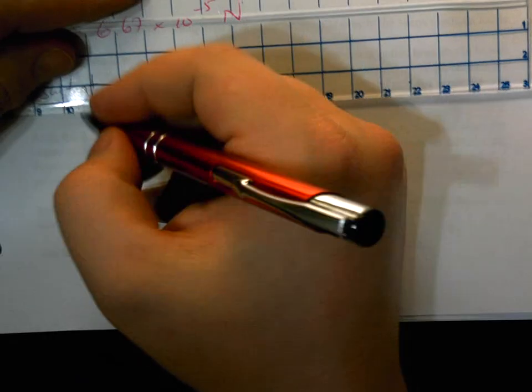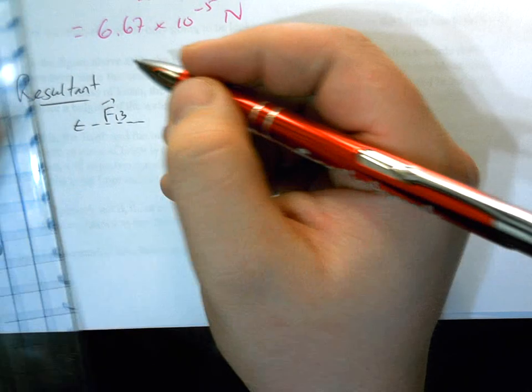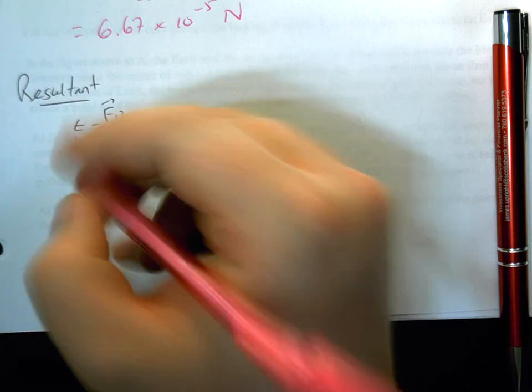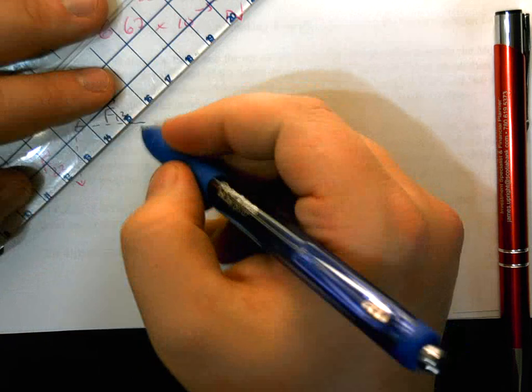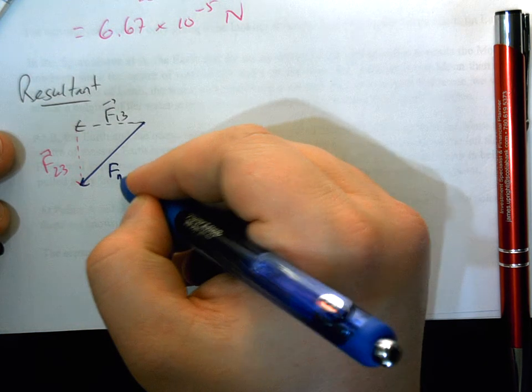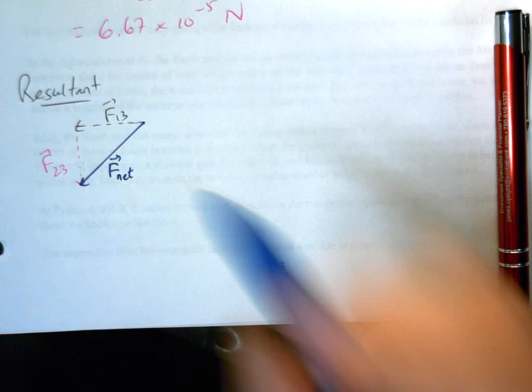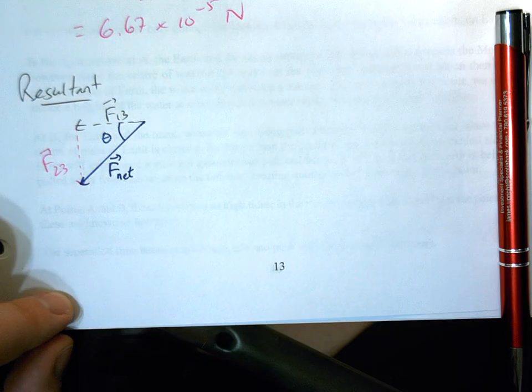So the resultant, we have this F1,3, we have this F2,3, and then of course we have our net force acting along this line here. And of course, we're going to want to determine this angle.